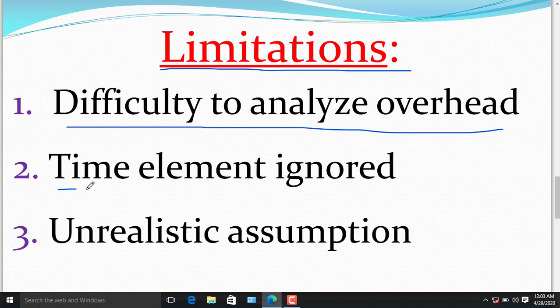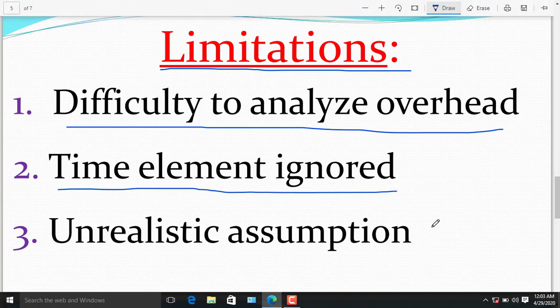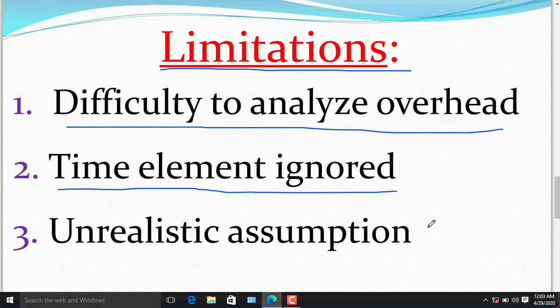The second limitation of marginal costing is time element ignored. Fixed cost and variable cost are different in the short run, but in the long run, all costs are variable. All costs change at varying levels of operations. When new plants or equipment are introduced, fixed cost and variable cost will vary.